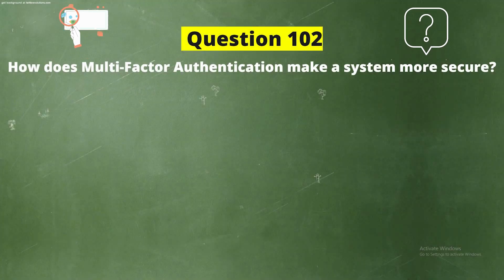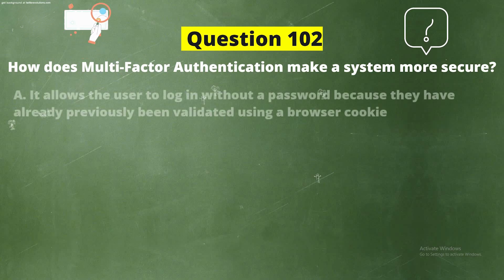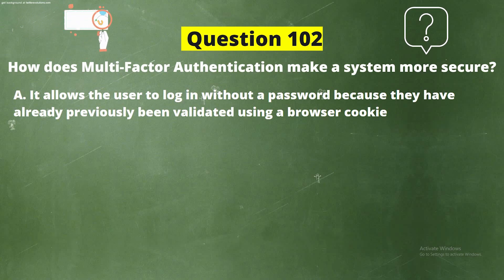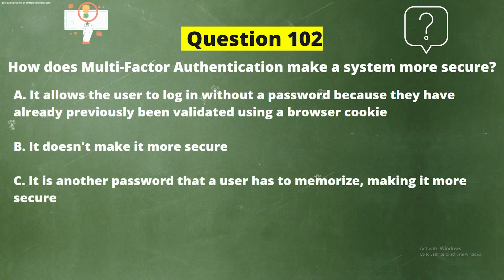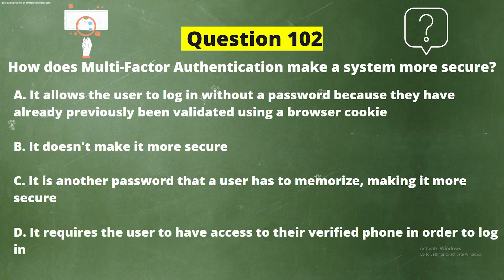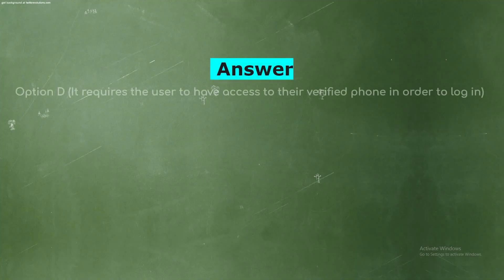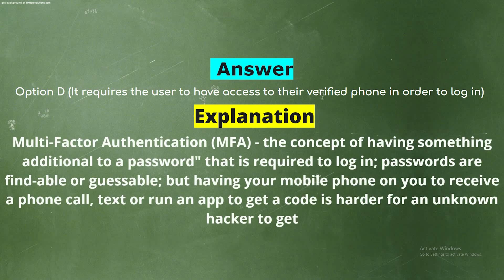Question 102. How does multi-factor authentication make a system more secure? The correct answer is Option D: It requires the user to have access to their verified phone in order to log in. Multi-factor authentication (MFA) is the concept of having something additional to a password required to log in. Passwords are findable or guessable, but having your mobile phone to receive a call, text, or app code is much harder for an unknown hacker to obtain.